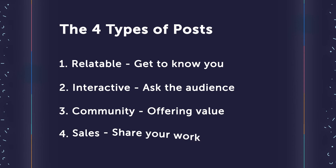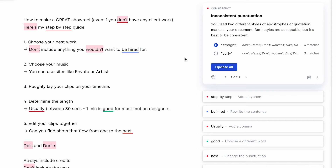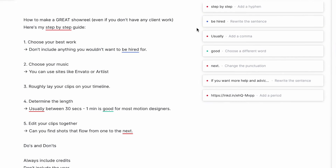The final type of post is a sales post — posting about your work. Notice how only one of these four post types is actually posting your own work. So if you feel like you have to post your animations all the time, it's just not true. A lot of the other posts will give you more value and help you to get more clients than just posting about your work. Additionally, I like to use Grammarly to create my posts because it helps keep them error-free and ensures you aren't making any grammar and spelling errors.